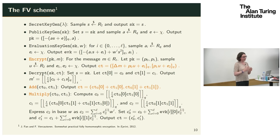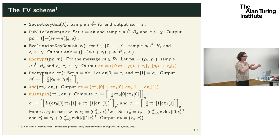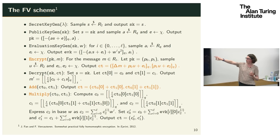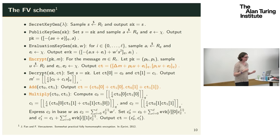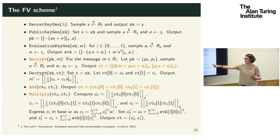Here is the FHE scheme — a running example for the rest of the talk. The ciphertext is a pair of elements in the ring. Homomorphic operations exploit the ring structure on the ciphertext space: addition of ciphertexts is component-wise polynomial addition, and multiplication involves polynomial multiplication with some scaling.